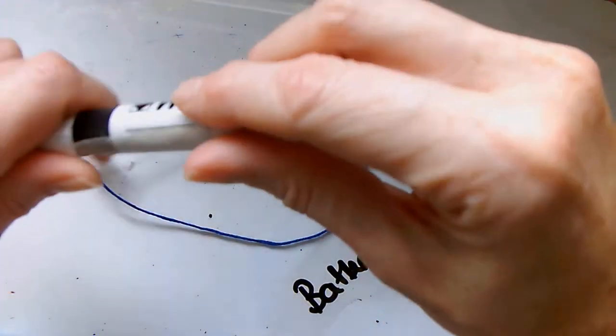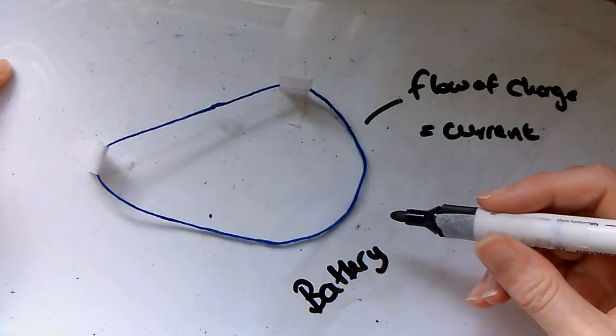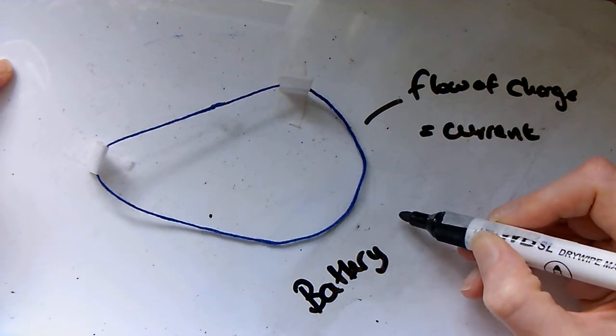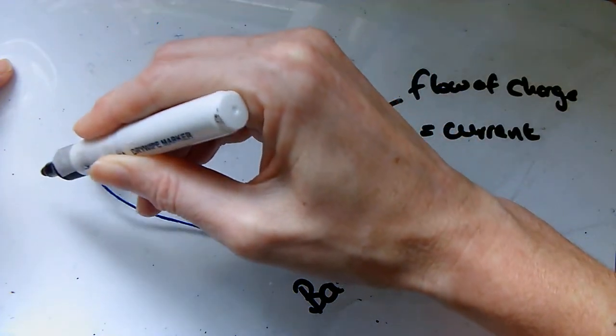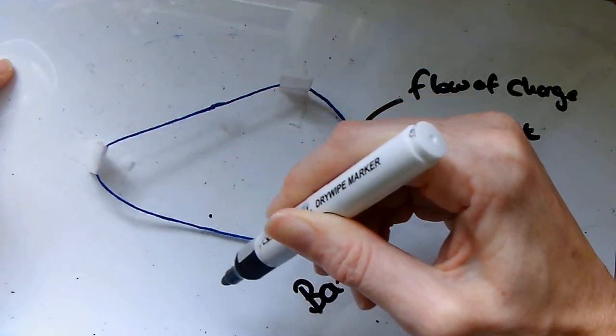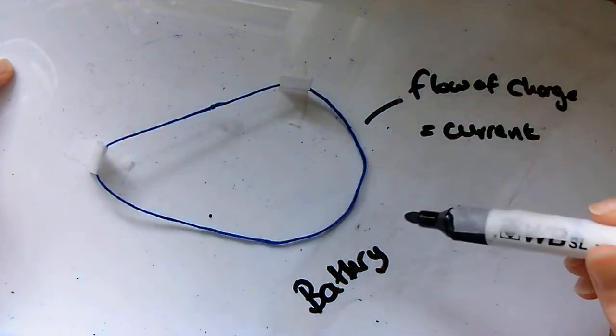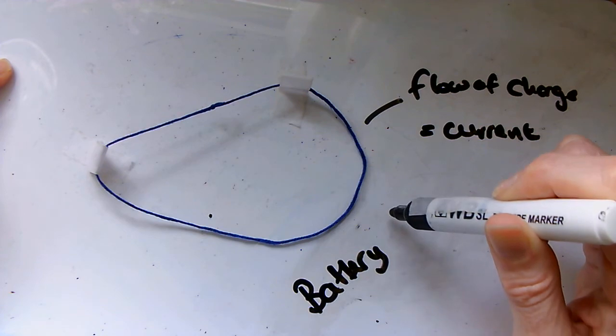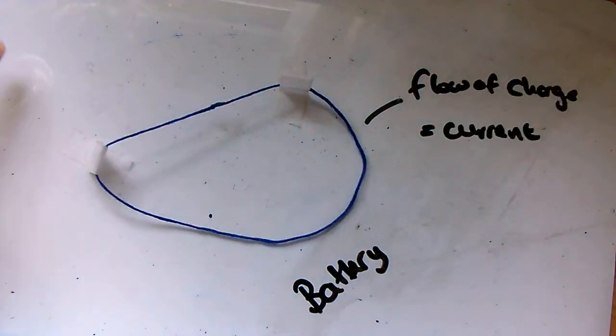What it doesn't do, and what some people think, is that it starts at the battery, and then the battery is like turning on a tap, and that the water then slowly makes its way around. Or you might even think that it's quite quick, like the speed of light or something, but that actually it starts here and then goes one after another, like water filling up a pipe. That is not what happens.